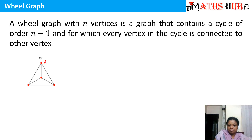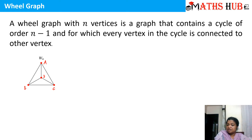You can see 4 vertices here. If I mark these vertices a, b, c, and d, I can see that there are cycles of length 3 here — for example, a-b-c, b-c-d, a-b-d, and many others. All the cycles are of length 3, and you can see that every vertex is connected to a cycle with the help of another vertex.